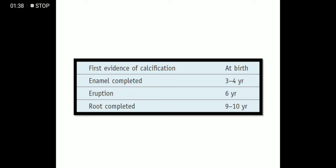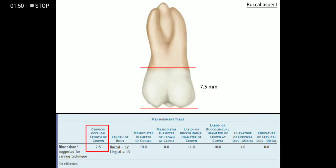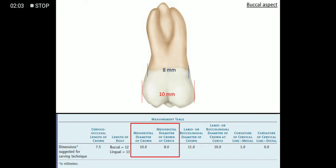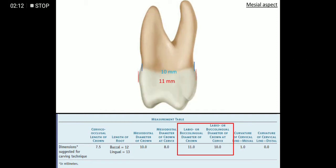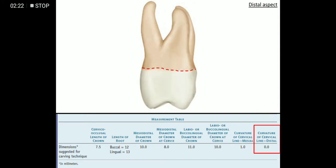The first evidence of calcification is seen at birth. Enamel is completed by 3–4 years. It erupts into the oral cavity at the age of 6, and root is completed by 9–10 years. The cervical-occlusal length of the crown is 7.5 mm. The length of the buccal root is 12 mm and the lingual root is 13 mm. Mesiodistal diameter of the crown is 10 mm and at the cervix it is 8 mm. Curvature of the cervical line mesially is 1 mm and almost 0 distally.